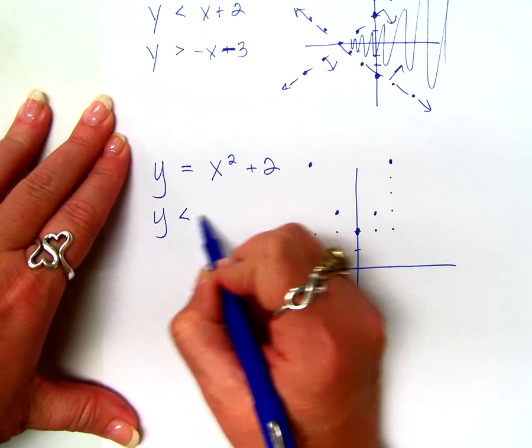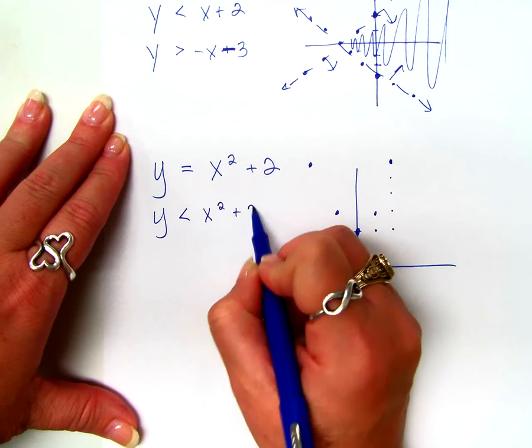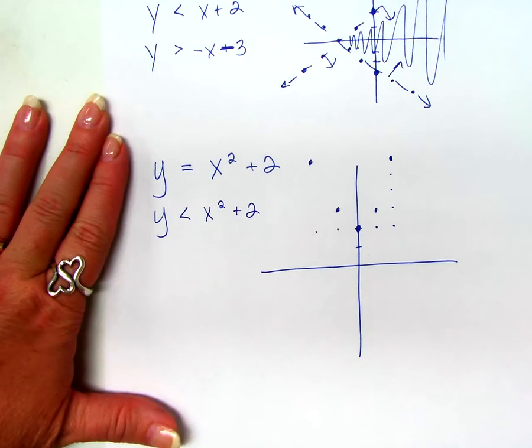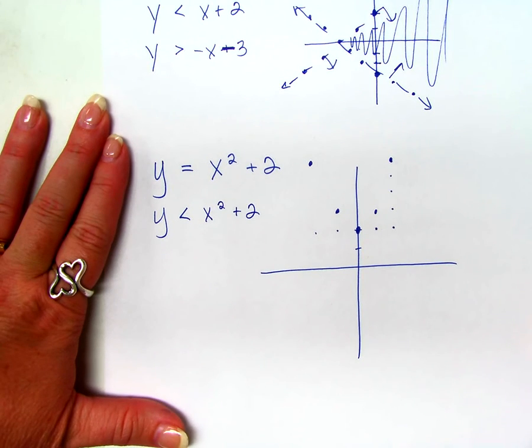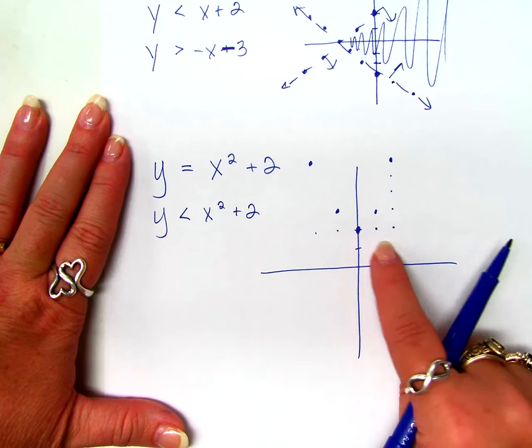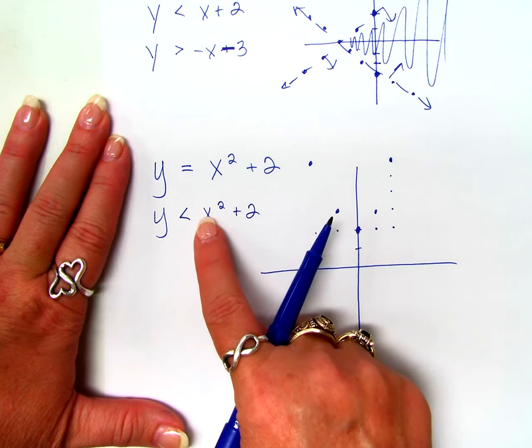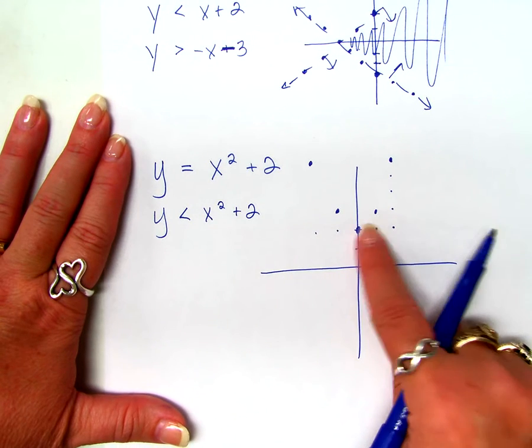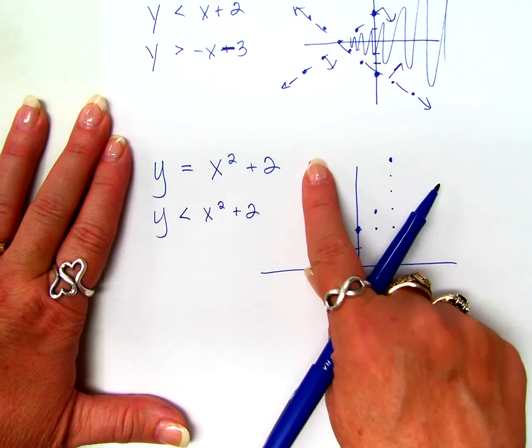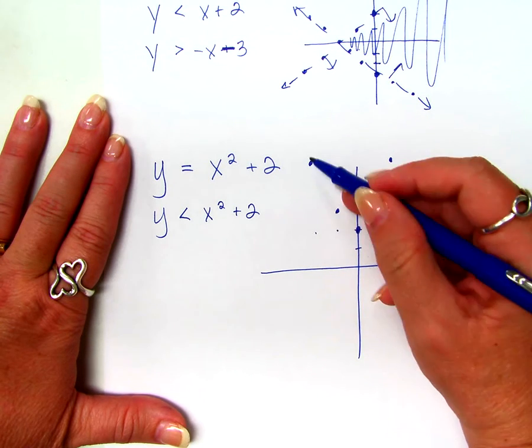So, how is it different than if we have this? Do I graph it any different? No, absolutely not. I still go up two, put my vertex there, and then I have parent function shape, because there's no multiplier here. So, one, one, two, four, one, one, two, four.